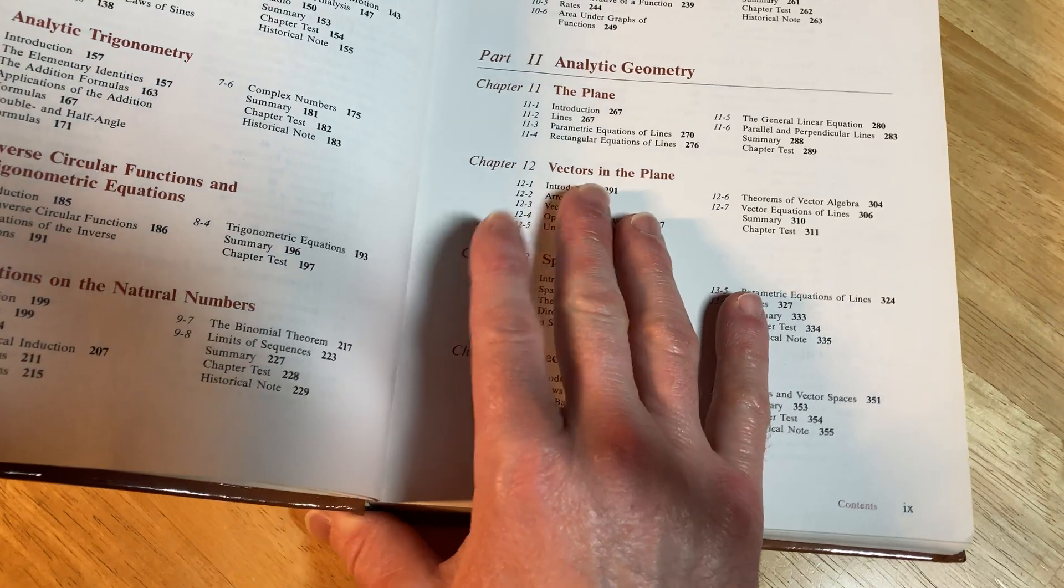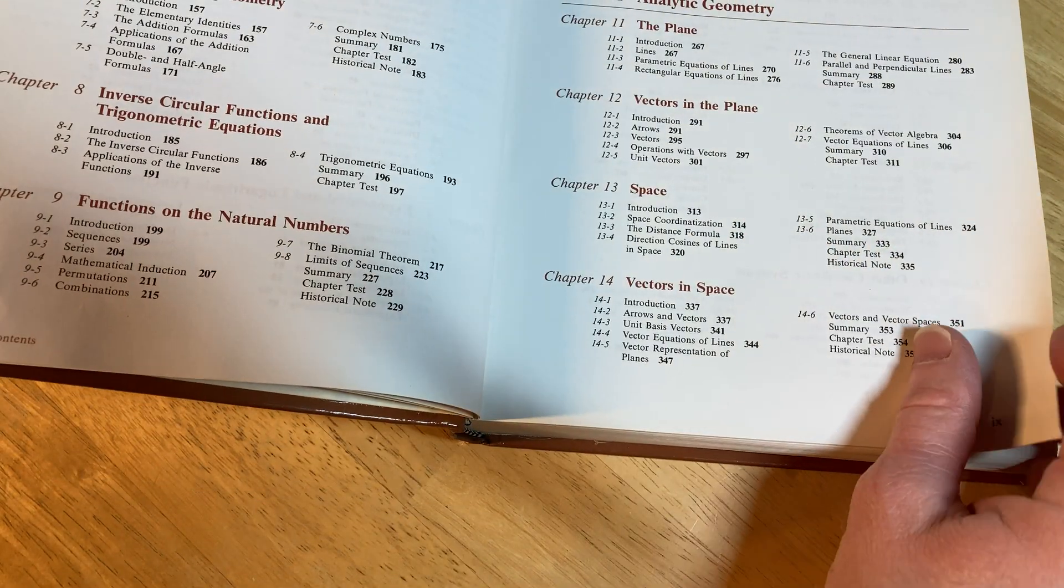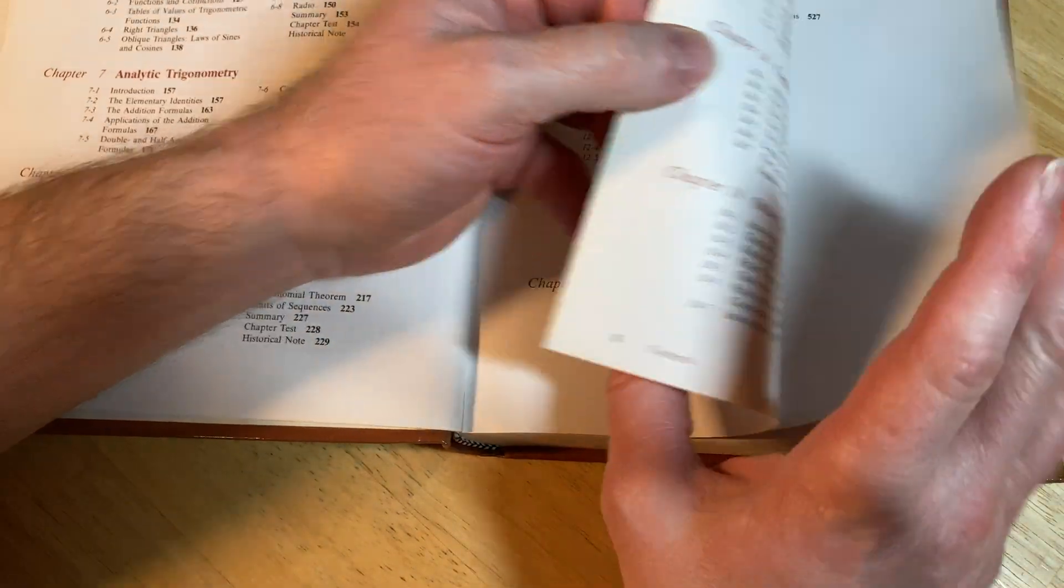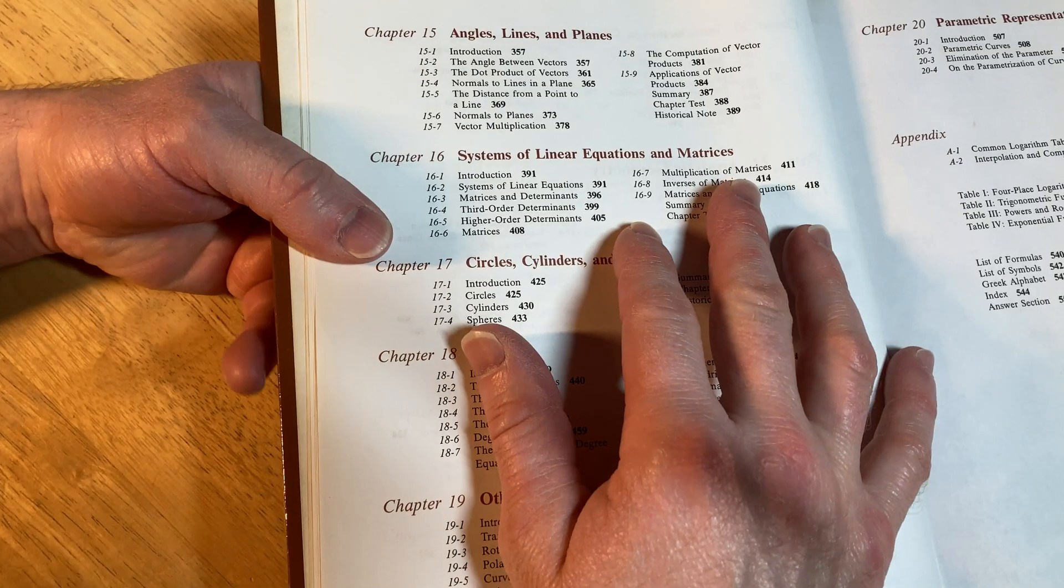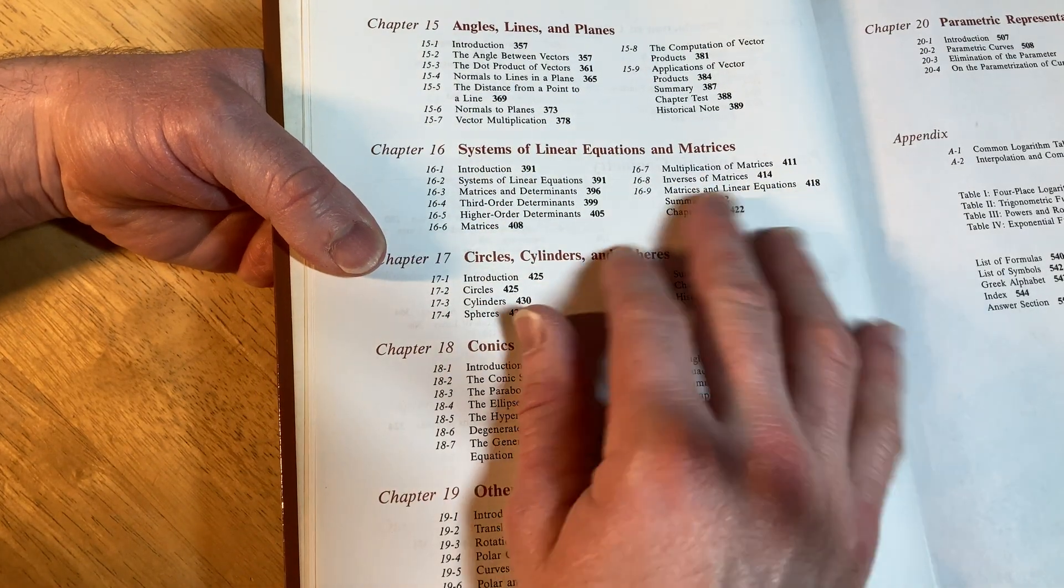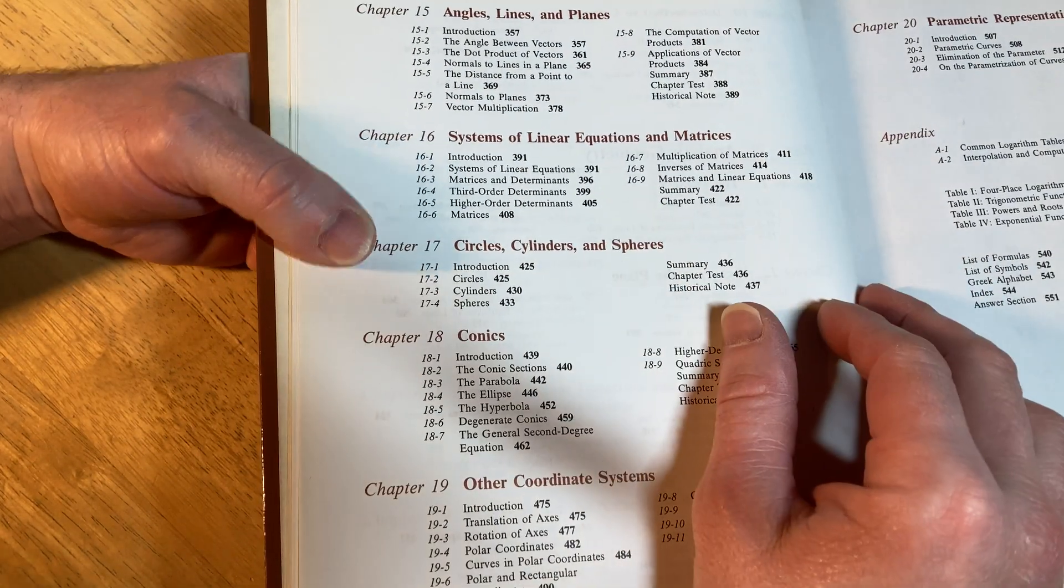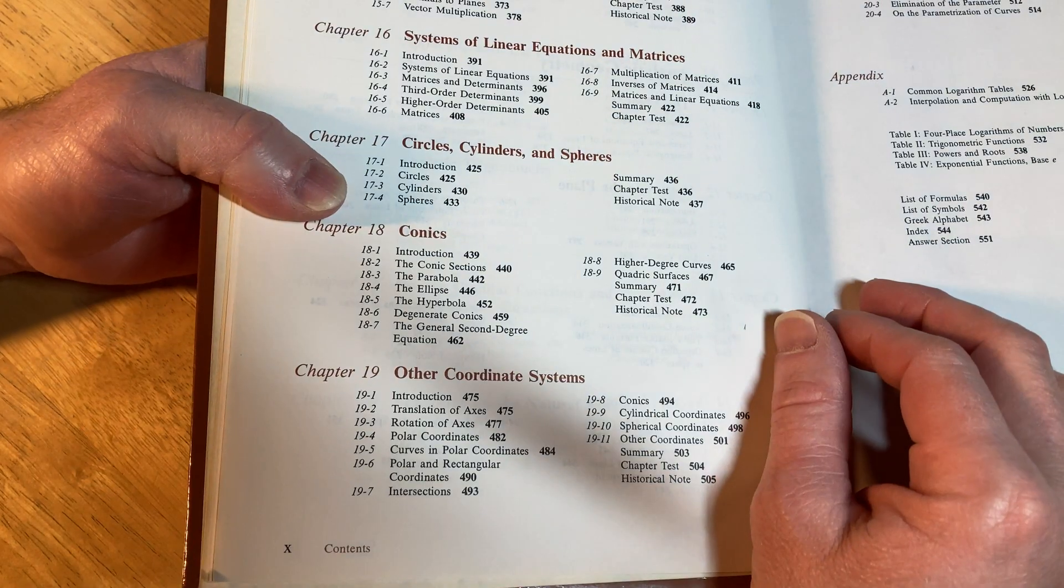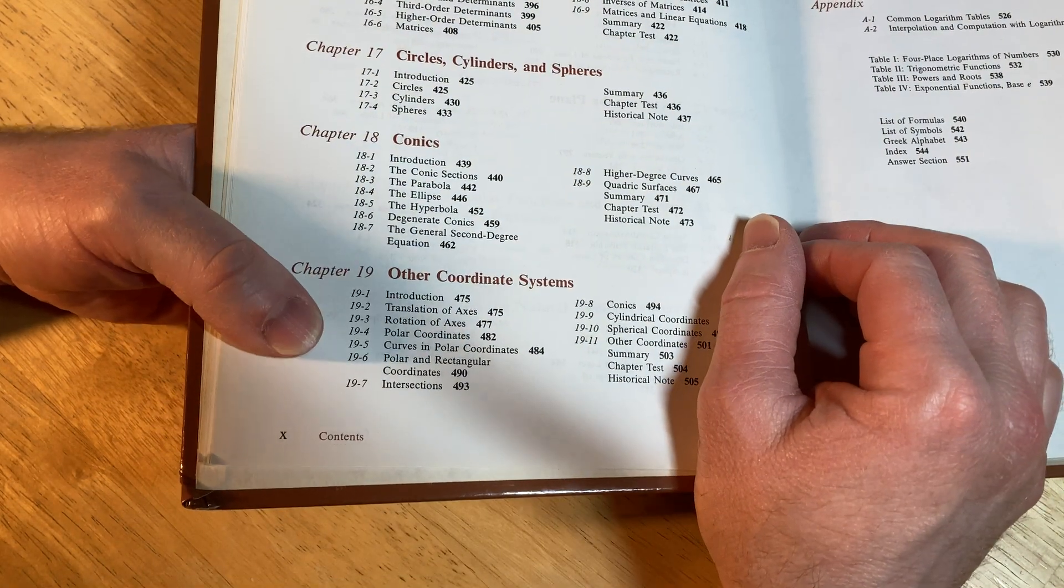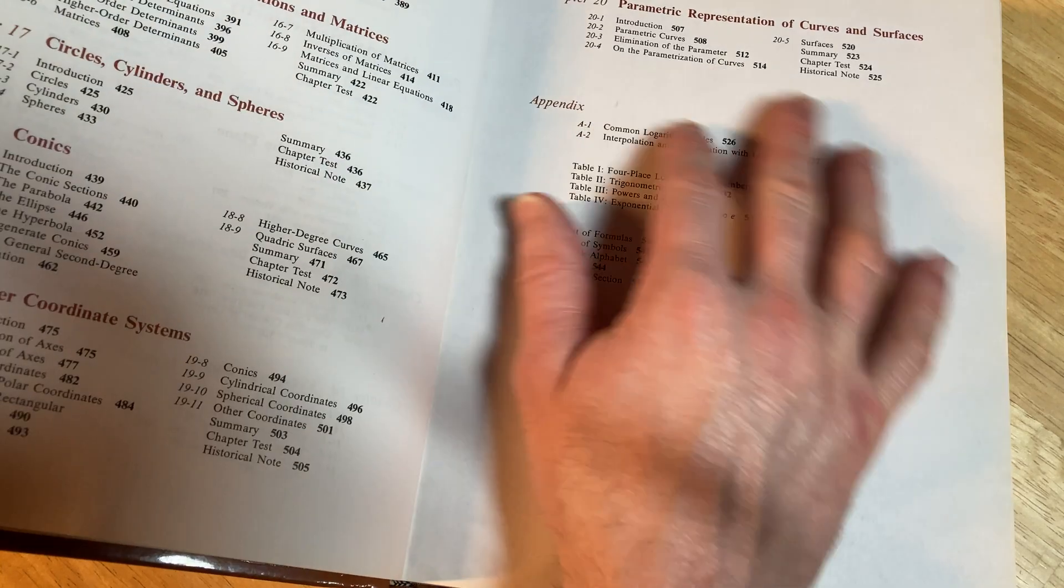And then we have some geometry: the plane, vectors in the plane, space, and vectors in space. And over here we have some more topics: angles, lines and planes, systems of linear equations and matrices, circles, cylinders and spheres, conics, other coordinate systems, and then some parametric stuff.